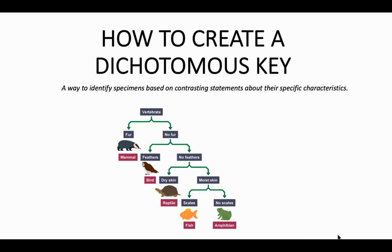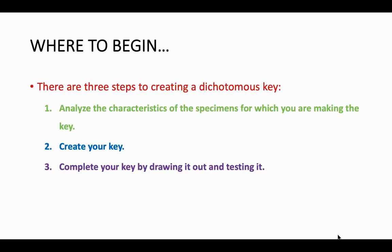A dichotomous key is a way to identify specimens based on contrasting statements. But how do you create a dichotomous key? There are three general steps. First, you need to analyze the characteristics of those specimens — what makes them different or similar. Then create the key based on those differentiating characteristics. And then test your key: can you identify the specimen based on your key and back to those characteristics?